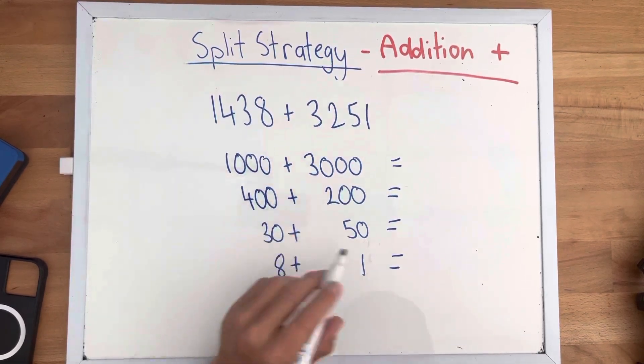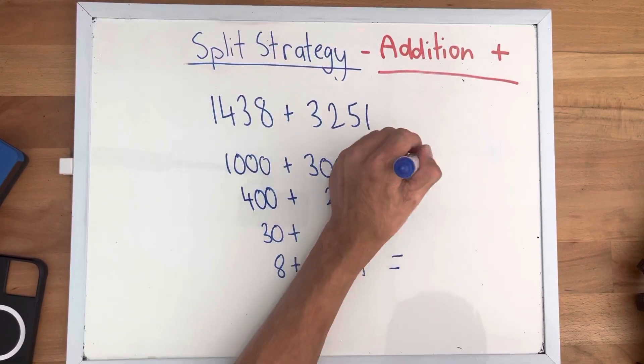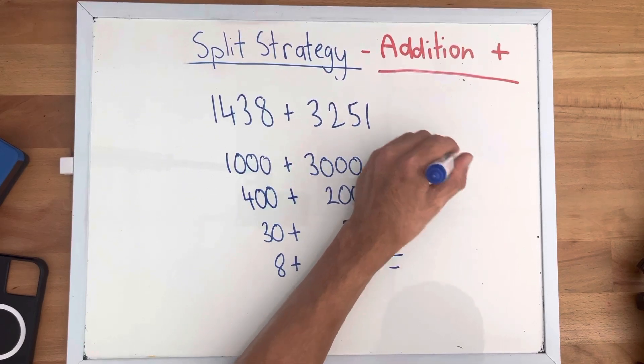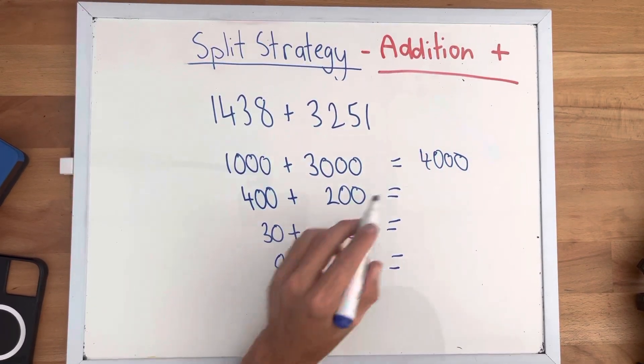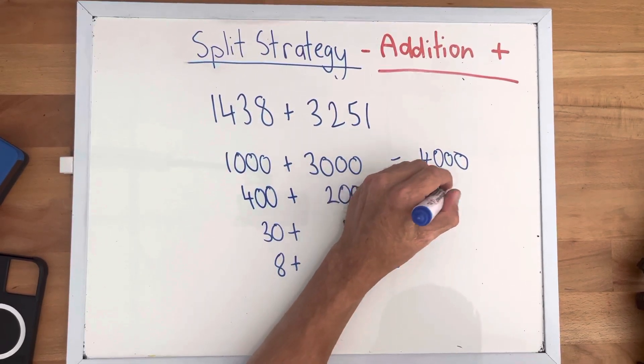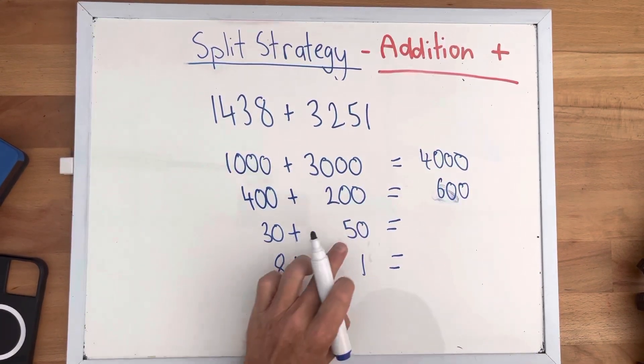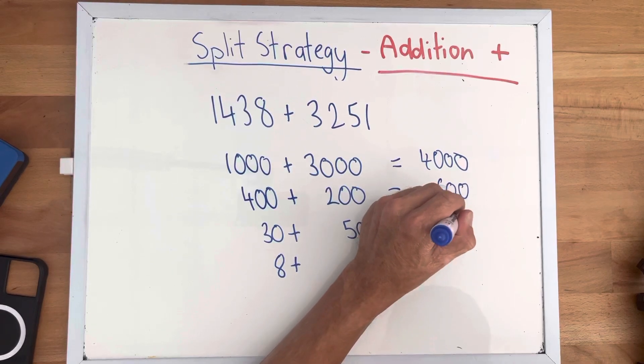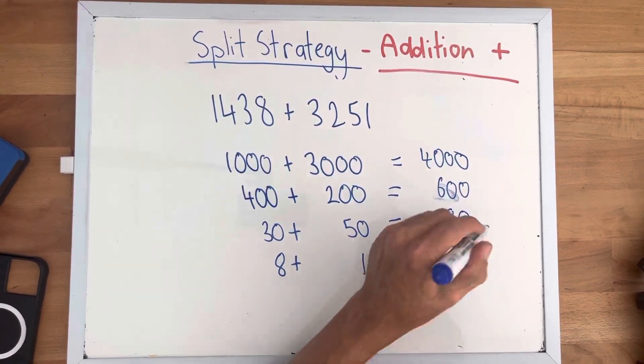So 1,000 plus 3,000 equals 4,000. 400 plus 200 equals 600. 30 plus 50 equals 80. And 8 plus 1 equals 9.